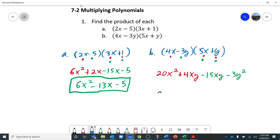Now we'll simplify that out. We've got 20x squared. 4xy minus 15xy is negative 11xy, and minus 3y squared. That is everything for that: 20x squared minus 11xy minus 3y squared.